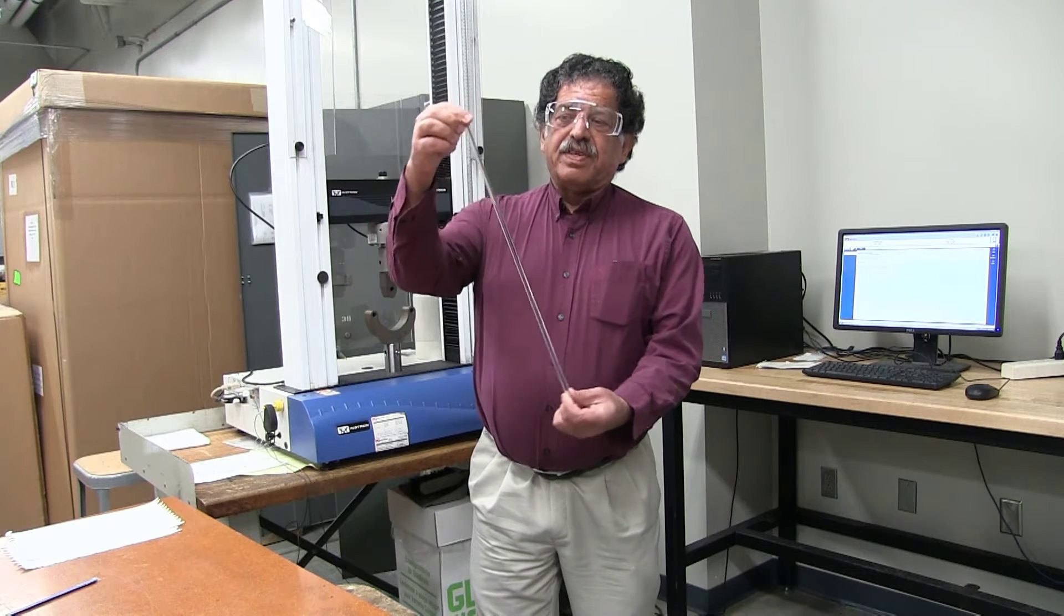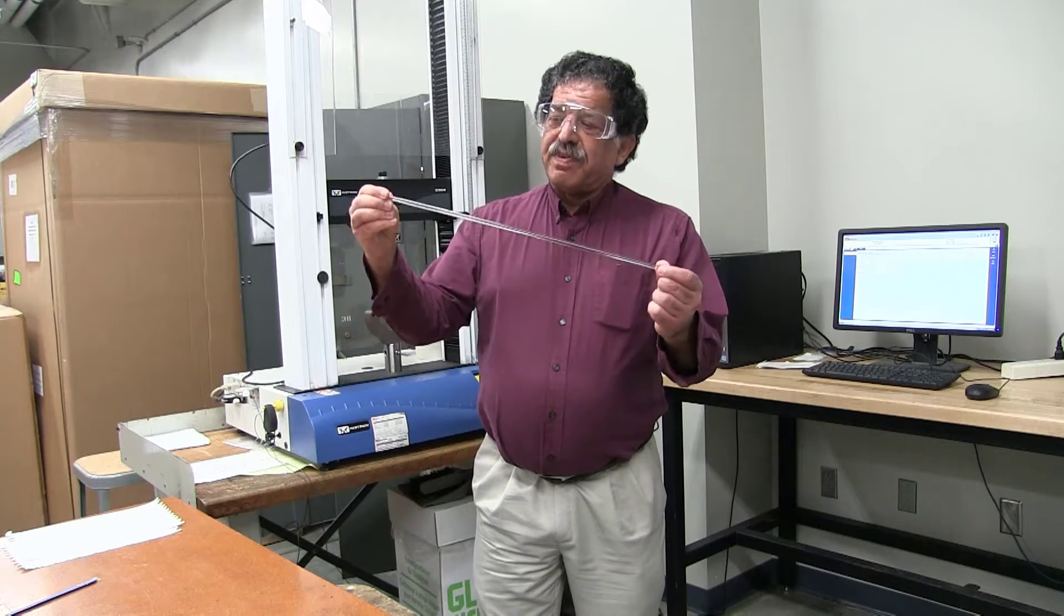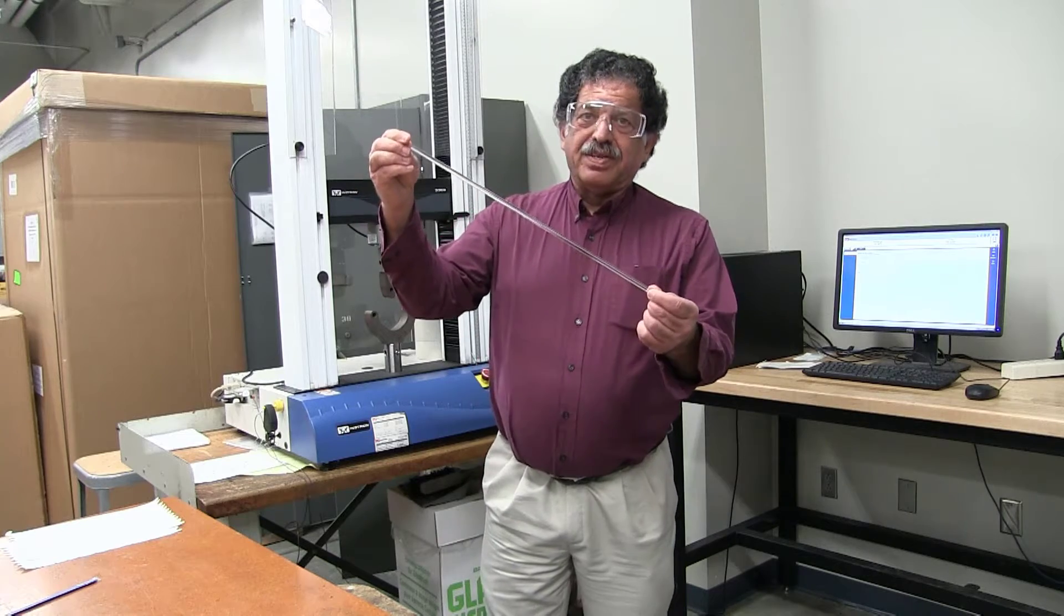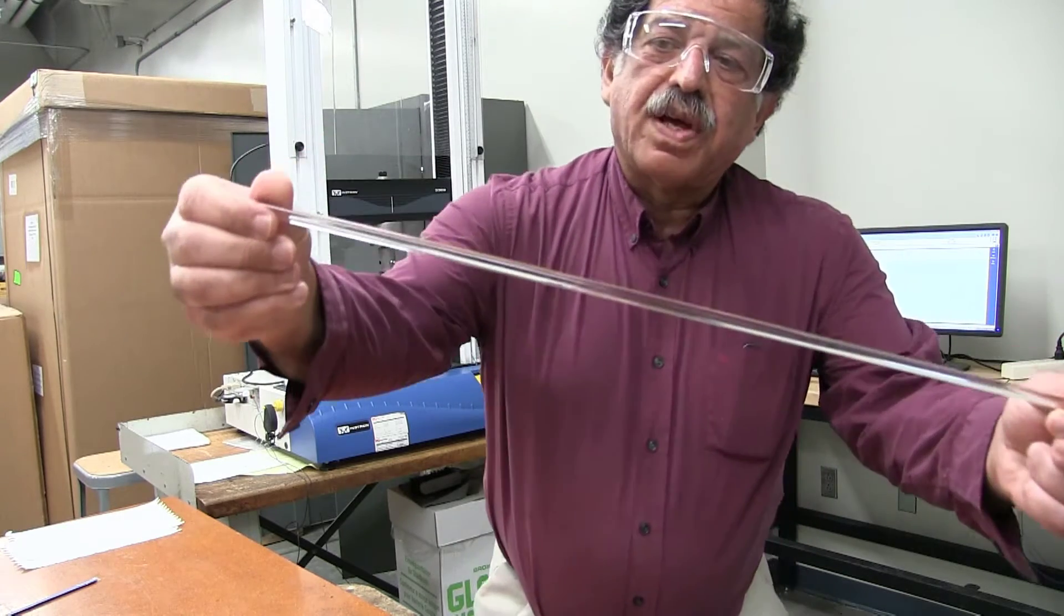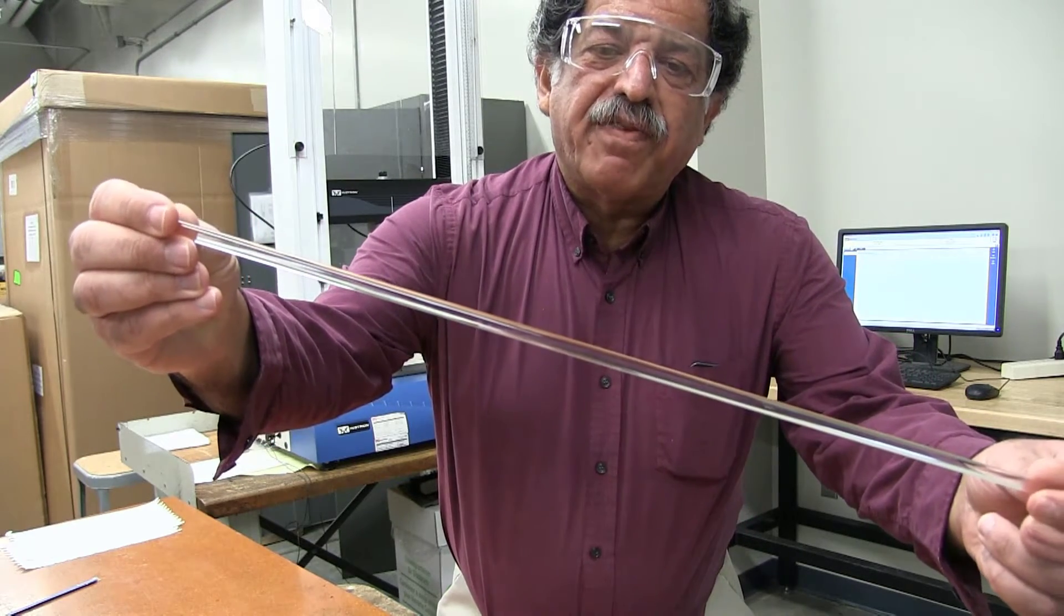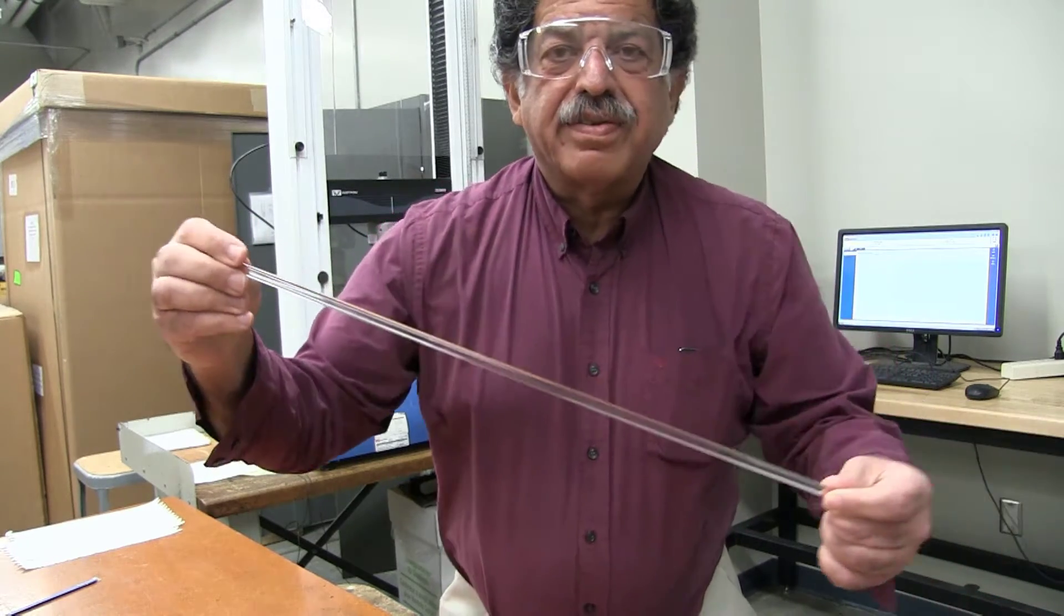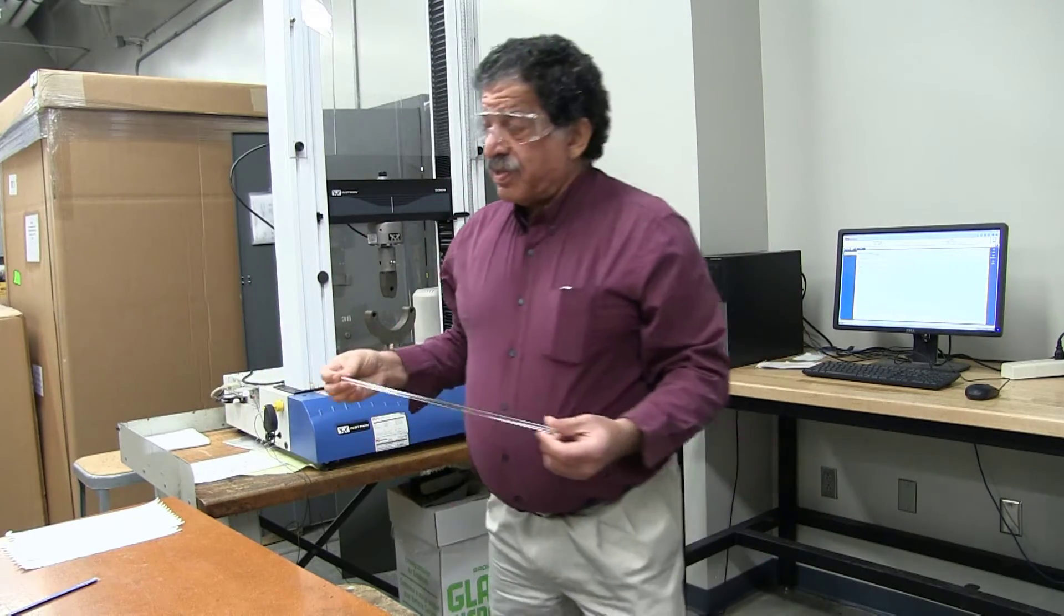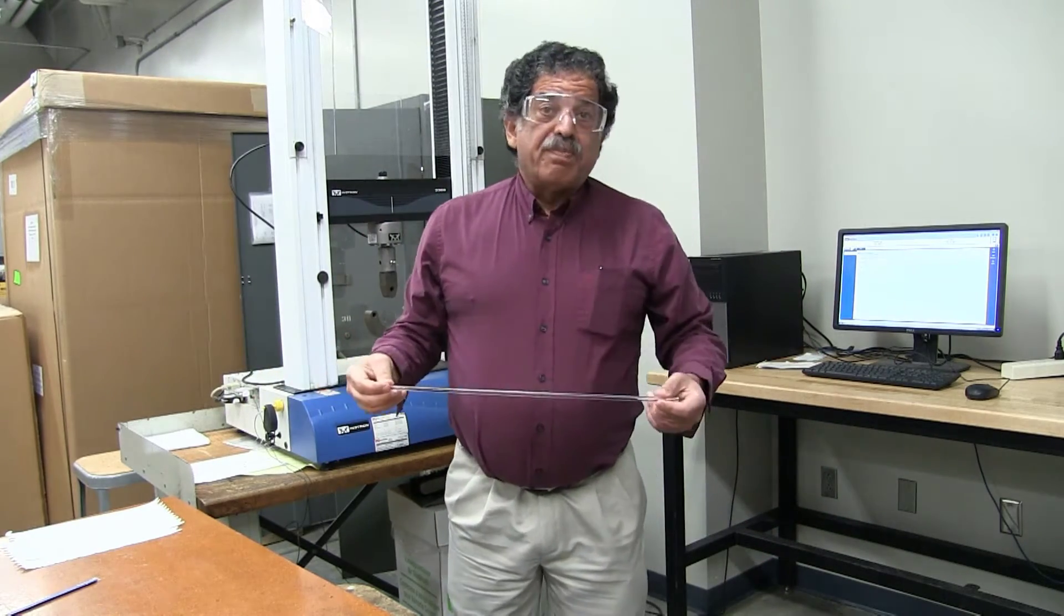This is the as-received condition of the glass rod, and if you look very carefully at the as-received condition, I'll bring this up and I don't know if this shows up on the camera or not, but there are very, very fine scratches on the surface, and those appear as a result of the normal manufacturing and shipping process.